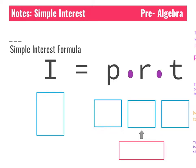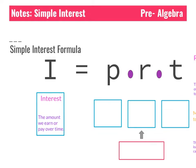Welcome back. Today we're going to be talking about simple interest. We have a simple interest formula that we need to use in order to solve all these problems. Let's start with taking a look at what each of the variables mean. I stands for interest — the amount of money that we earn or pay over time. To figure that out we need an amount of money we start with, which we call the principal.